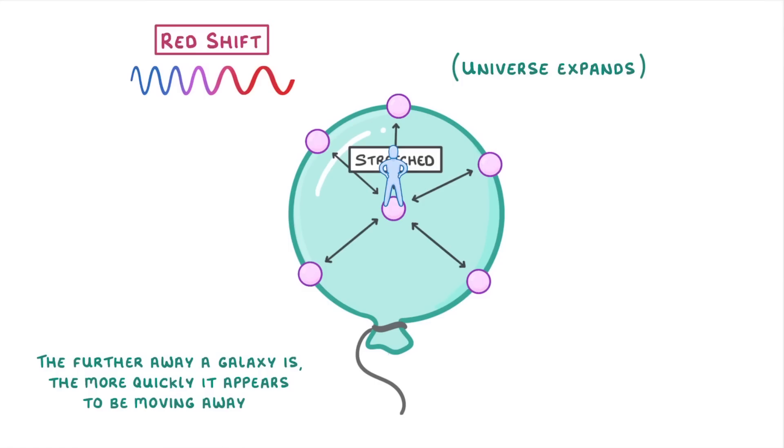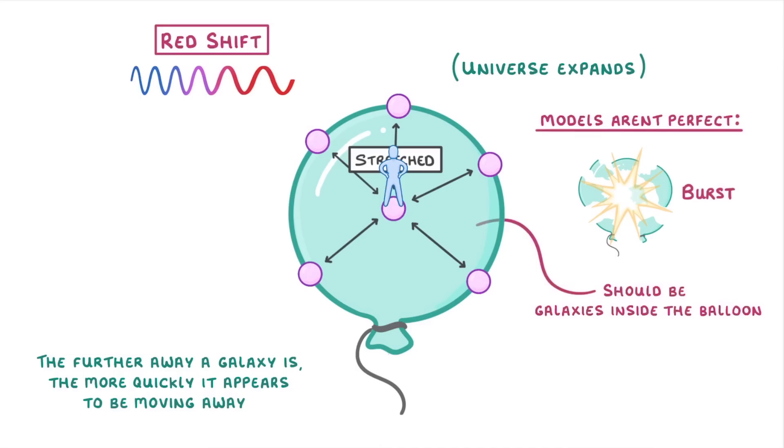Now, whenever you're working with models like this, you have to remember that models aren't perfect. For example, in this model, one limitation is that balloons only stretch so far until they burst, whereas the real universe isn't likely to burst. And also, if this was meant to represent the universe, then there should be galaxies inside the balloon, rather than just on its surface. Despite all of these limitations, though, we still use models because they help us to understand difficult concepts, which can otherwise be kind of hard to understand.